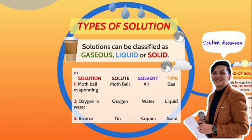Types of solution. Solutions can be classified as gaseous, liquid, or solid. For example, we have mothballs evaporating, oxygen in water, and bronze. For mothballs evaporating, the solute is mothballs, the solvent is air, and the type is gaseous. Oxygen in water: the solute is oxygen, the solvent is water, and the type is liquid. For bronze, the solute is tin, the solvent is copper, and the type is solid.